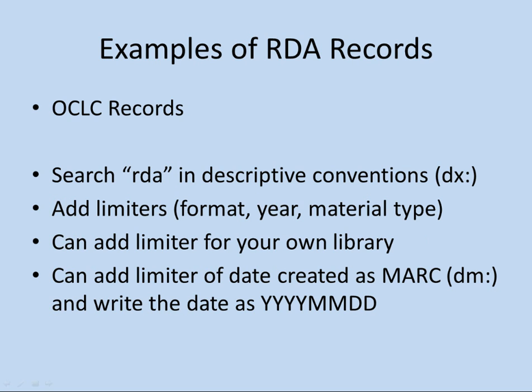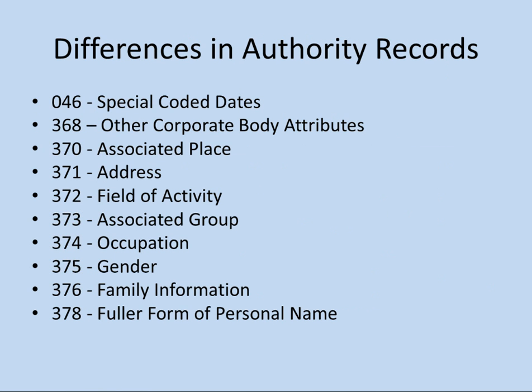If you have access to OCLC Connexion, you can search WorldCat records for RDA examples. A question came in: if a person is identified as an author or illustrator or editor or contributor on different manifestations, does this person have one or multiple authority records? They would have one authority record, but all their different roles could be included in the field of activity or occupation. You can repeat the subfield so they can have more than one role specified in one authority record.